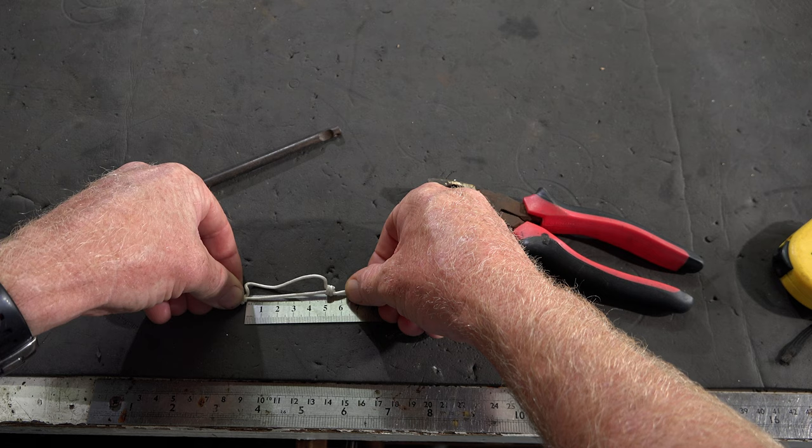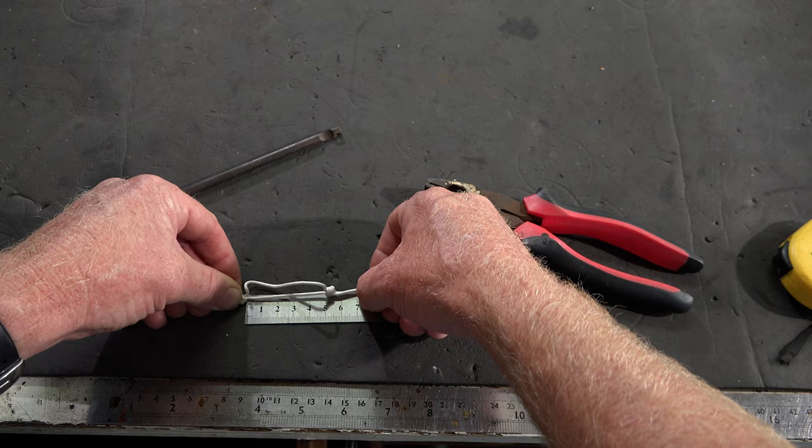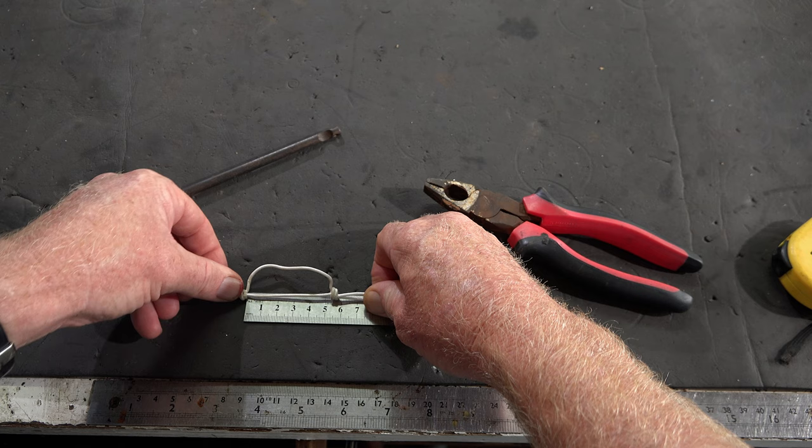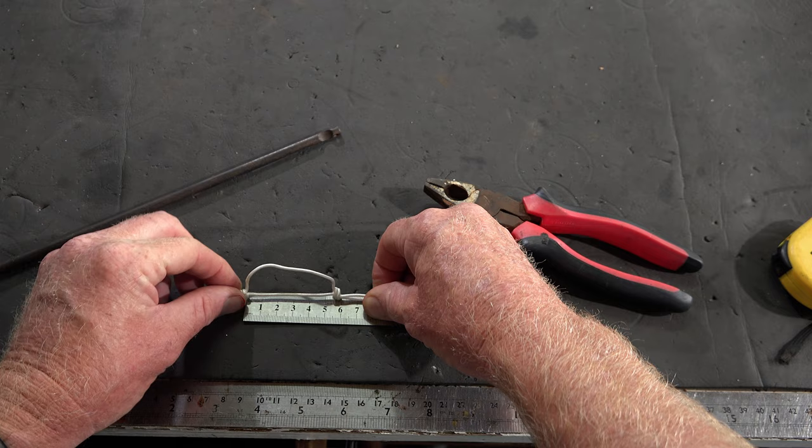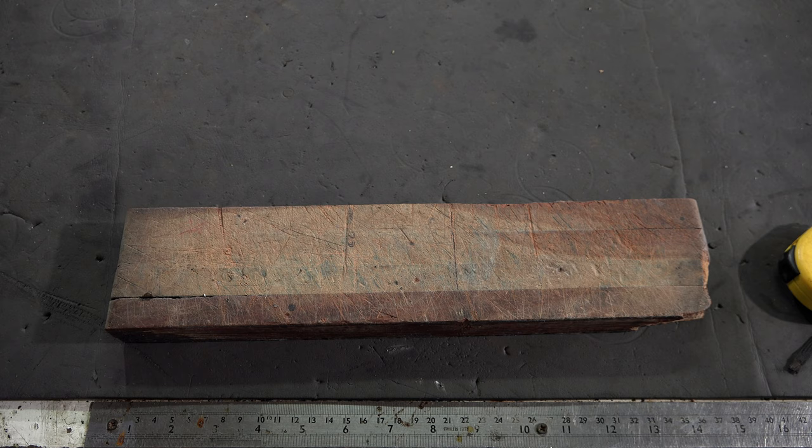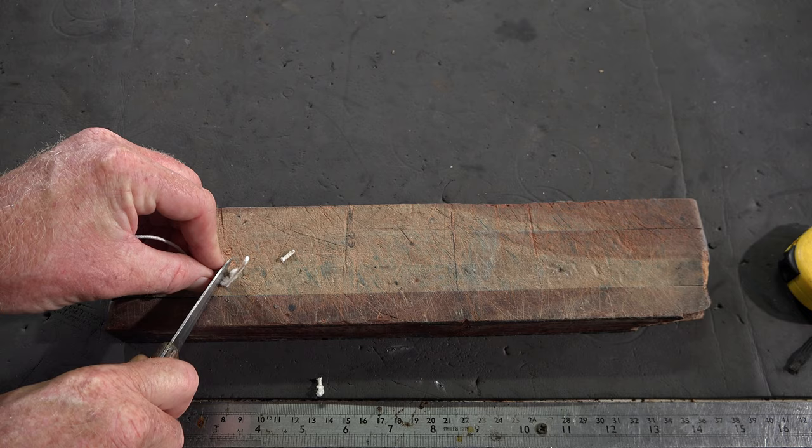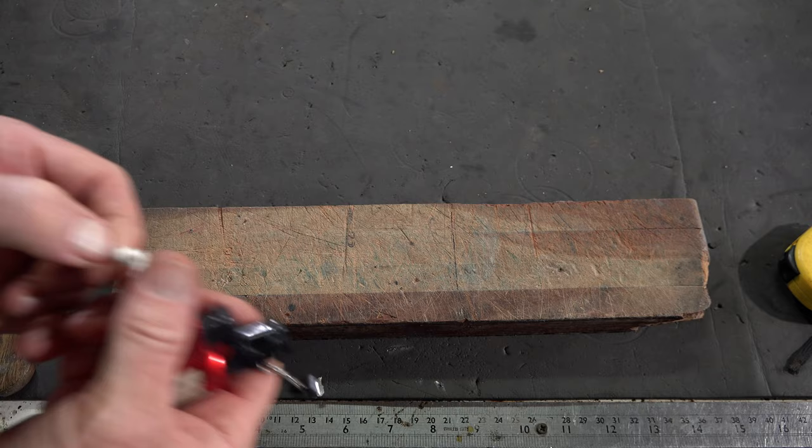You want to be about five centimeters. Seven is about as far as I'd go, but on my roller muzzles about five to five and a half centimeters is good. So you've got a long one and a short one. Take a knife, trim off these ends, nice and clean.